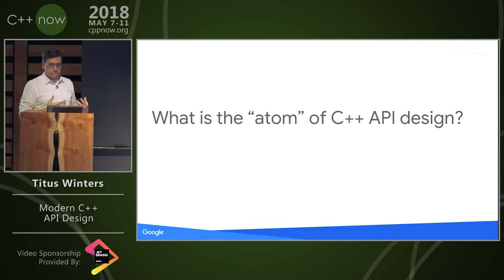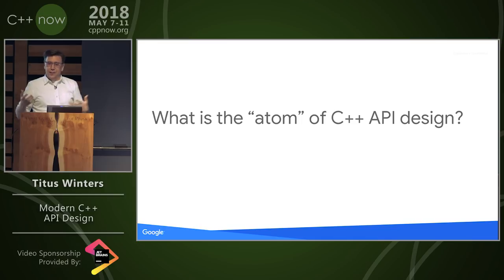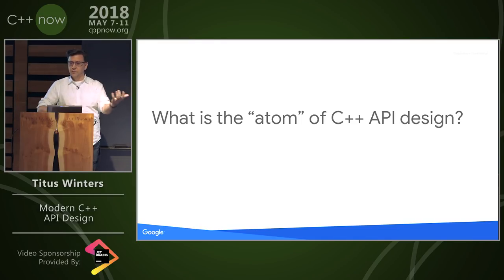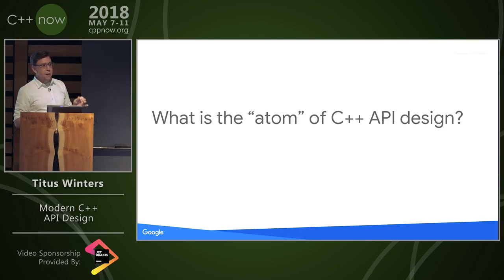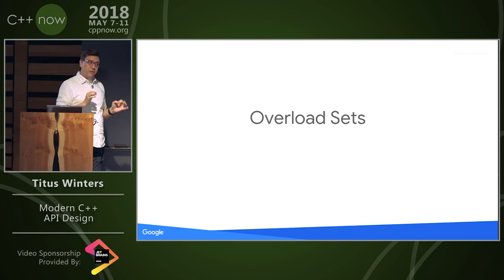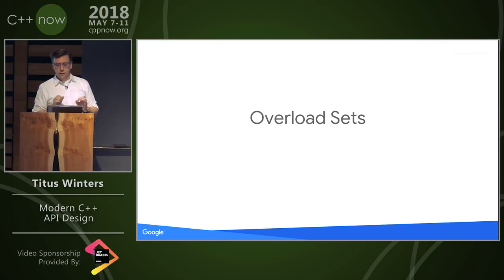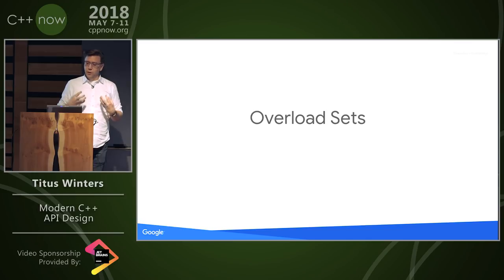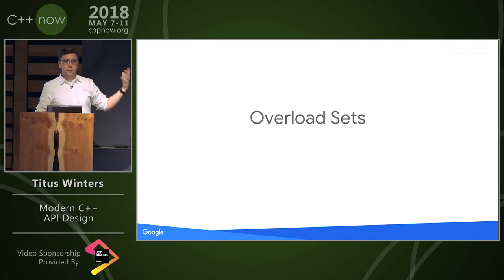If you asked me this a year ago, I would have said the function, and assumed it was a trick question. After all, that's the thing we use the most — free functions, member functions, special member functions. But recently I've started to think that maybe functions are protons. The better unit of design is slightly larger: the overload set. When overload sets are well designed — and there is very good agreement on what makes up a well-designed overload set — overload sets are a better unit, especially as we move into a richer type system with concepts and deeper understanding of move semantics.